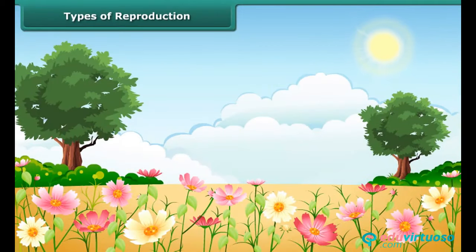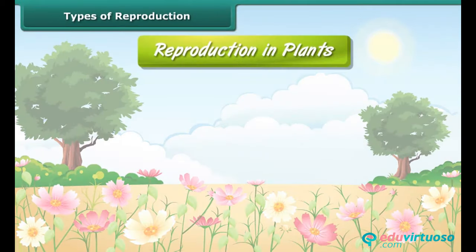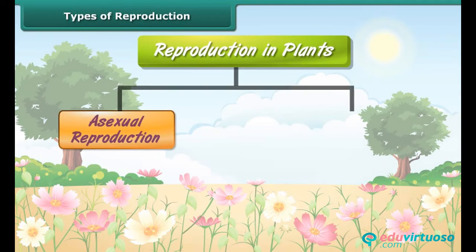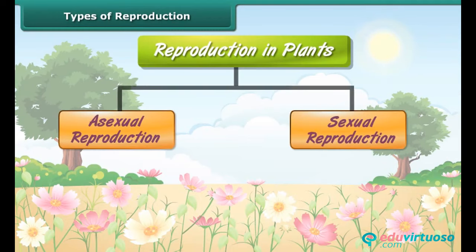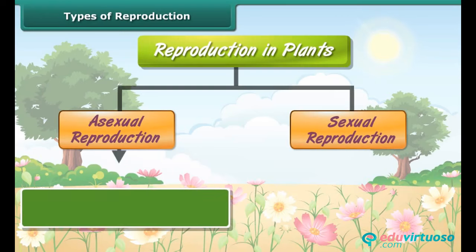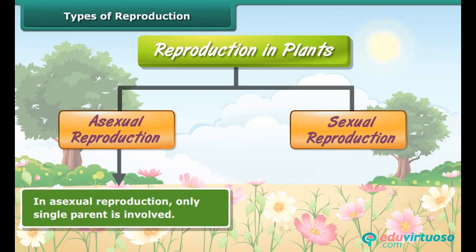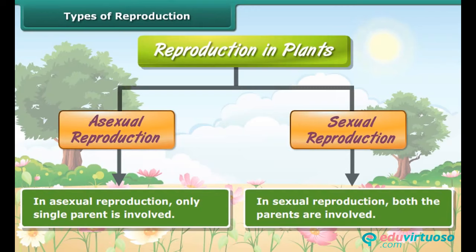Types of reproduction. Reproduction in plants can be achieved through two ways: asexual reproduction and sexual reproduction. In asexual reproduction, only a single parent is involved, whereas in sexual reproduction both parents are involved. Let's study about them in detail.